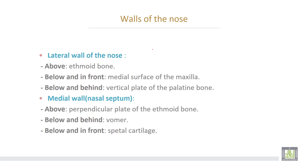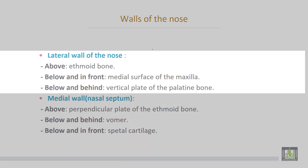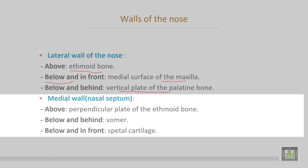The walls of the nose: the lateral wall of the nose is formed from above by the ethmoid bone, from below and in front by the medial surface of the maxilla, and below and behind formed by the vertical plate of the palatine bone.